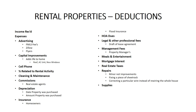Most of the deductions on this slide are self-explanatory. The only thing I want to touch on is capital improvements versus repairs. Capital improvements are items that add to the useful life of the property — a new roof, a new AC unit, a new water heater, etc. These items are typically depreciated over their useful life instead of being expensed outright. A repair, on the other hand, is expensed outright — repairing a sheetrock wall, a plumbing leak, or an electrical shortage.